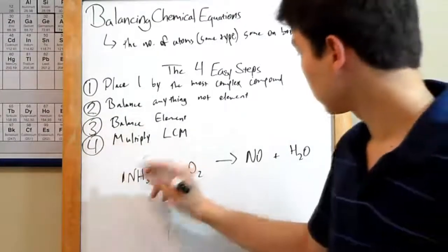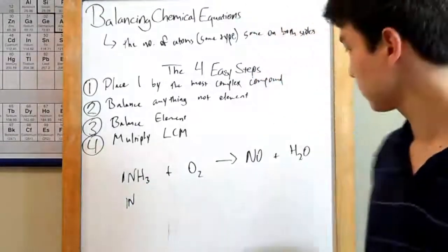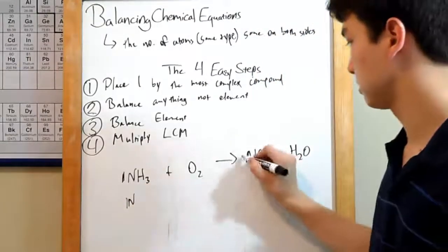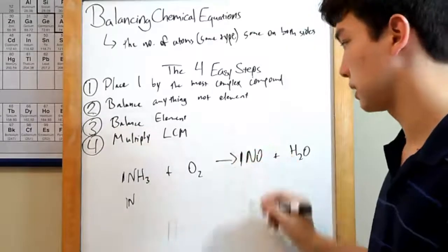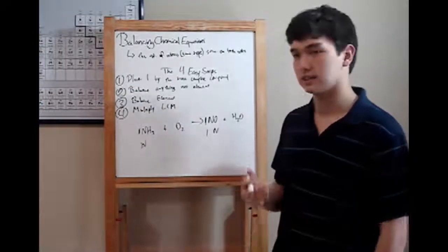Let's just start with nitrogen. On this side, we have one nitrogen. One times one is one. Over here, in order to keep nitrogen as constant, we just put a one over there. We've got one nitrogen here as well. Great. That was easy.